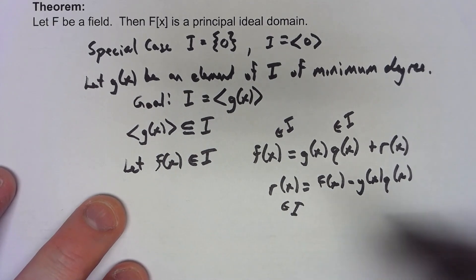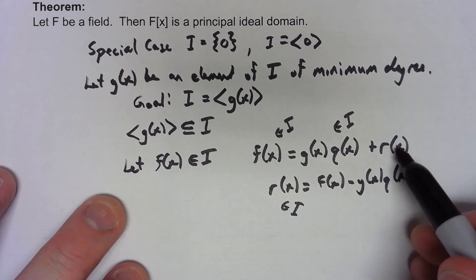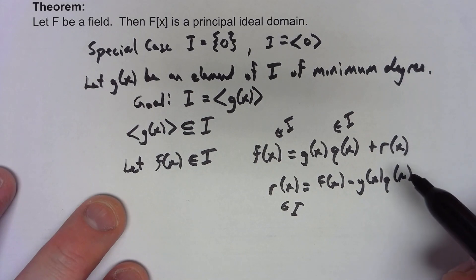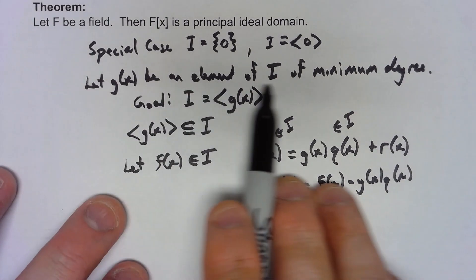But again, by the division algorithm, r(x) is a lower degree than g(x), and g(x) was an element of minimum degree in that ideal.